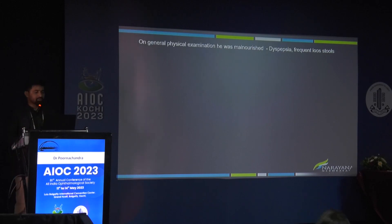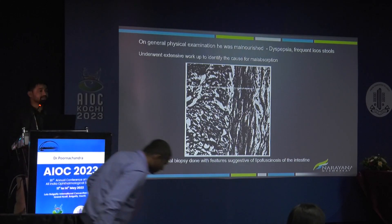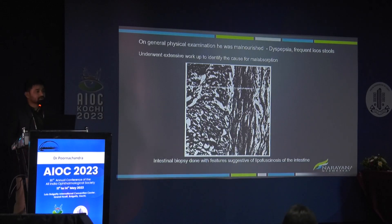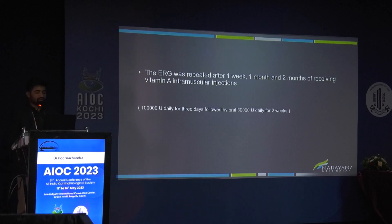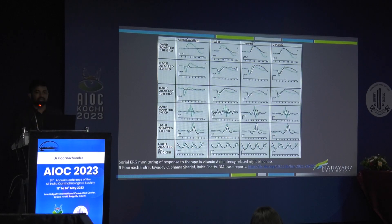On general physical examination the patient appeared malnourished — a reminder that we are also physicians who must take a holistic approach. Further questioning revealed dyspepsia and frequent loose stools. Extensive workup identified malabsorption, and an intestinal biopsy confirmed intestinal autokeratosis as the cause of vitamin A malabsorption. ERG was repeated at one week, one month, and two months after vitamin A supplementation, showing progressive normalization with a near-normal ERG at two months.